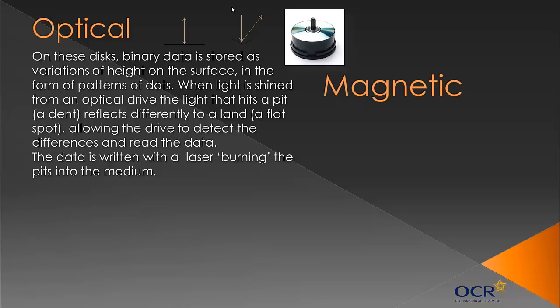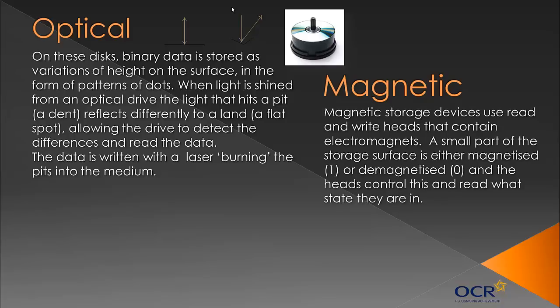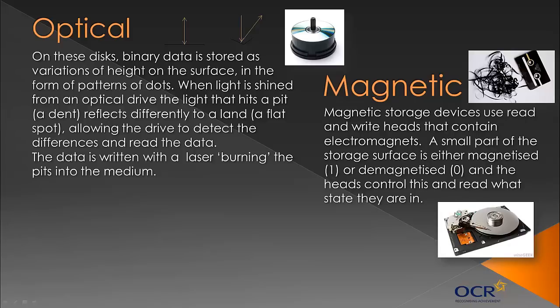Magnetic storage is what's most commonly used in your hard disk. These devices use read/write heads that contain electromagnets. A small part of the storage surface is magnetized, representing the binary digit one, or demagnetized, representing the binary digit zero. The heads control this and read what state the surface is in. Your hard disk has a read/write arm and a spinning platter — the arm magnetizes or demagnetizes parts of the platter and reads the state back to the processor. Cassettes from the 1980s and 1990s also use magnetic tape, where magnetized and demagnetized sections represent the stored data.